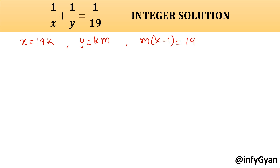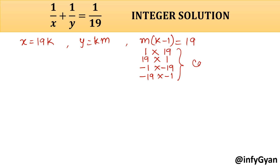Because 19 is a prime number, we can factorize in this manner: 1 times 19, 19 times 1, negative 1 times negative 19, and negative 19 times negative 1. So there are four cases.